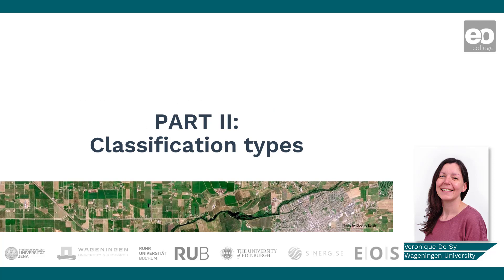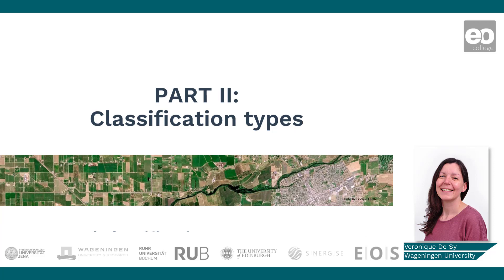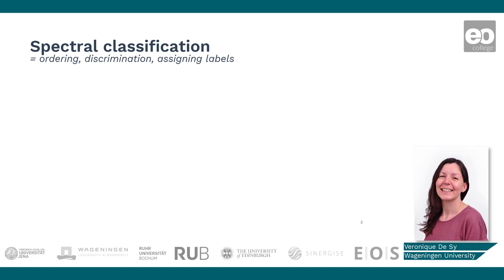Spectral image classification uses the spectral information represented by digital numbers or pixel values in one or more spectral bands, and attempts to classify or label each individual pixel based on the spectral information.